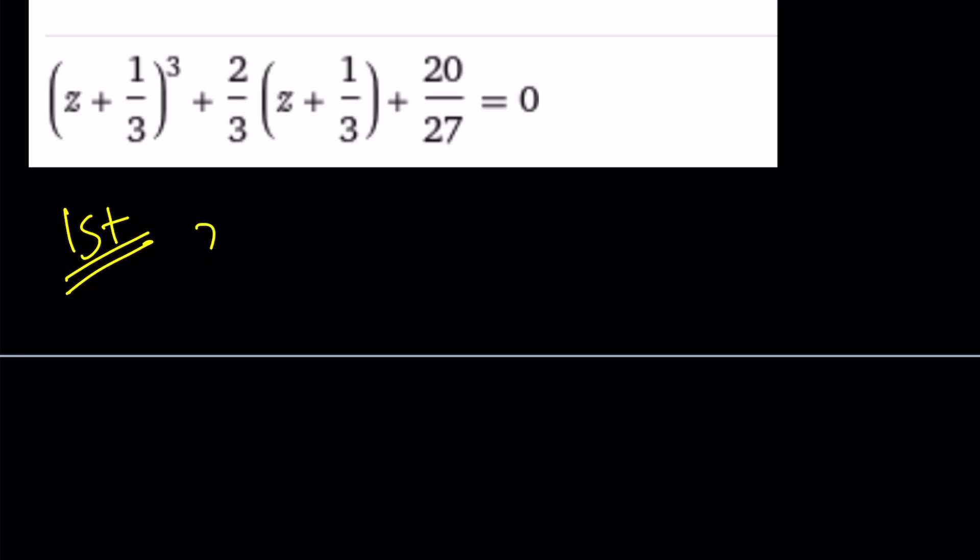Replace z plus one third with y and don't question why. And you're going to get y cubed plus two over three y equals negative 20 over 27. So I subtracted the constant from both sides because that's what the cubic formula requires or necessitates.